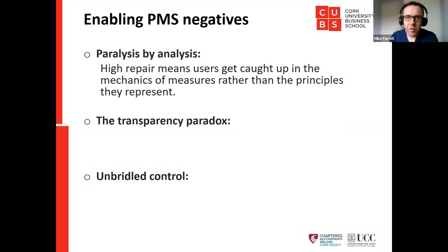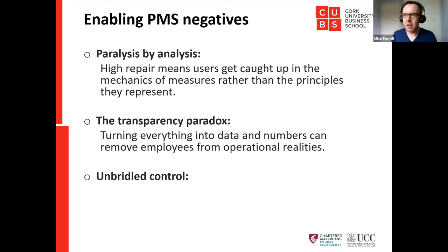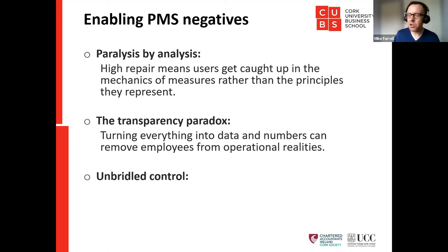The second problem is the transparency paradox: turning everything into data and numbers can remove employees from operational realities. If you've got too many measures, you may think you have great visibility, but the research suggests this actually distances you from what's happening on the ground — you're representing everything as a number. Like how Facebook calls people 'nodes' rather than people — they're removing themselves from the reality of what's happening.